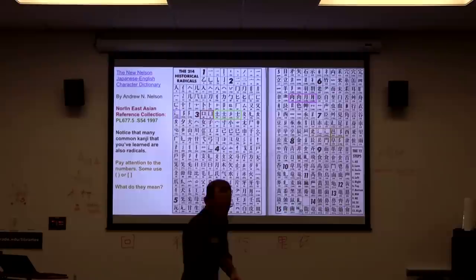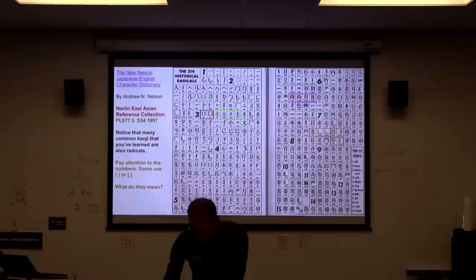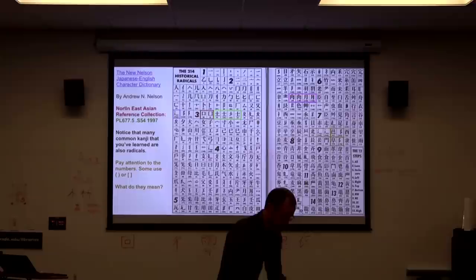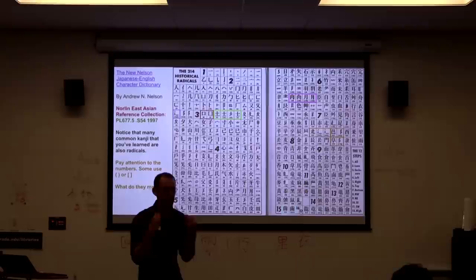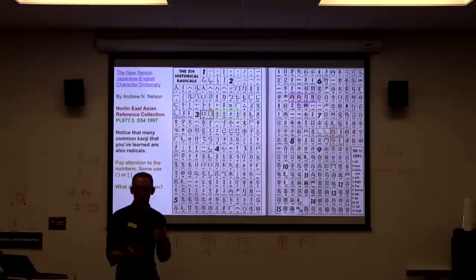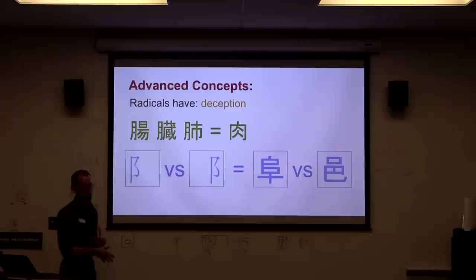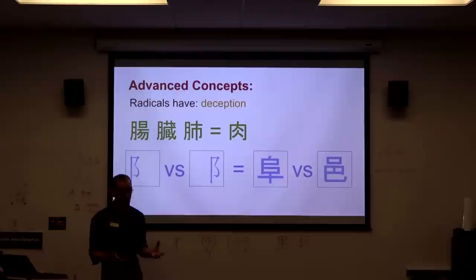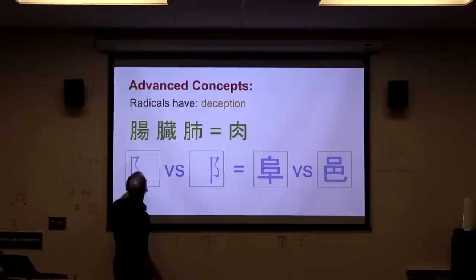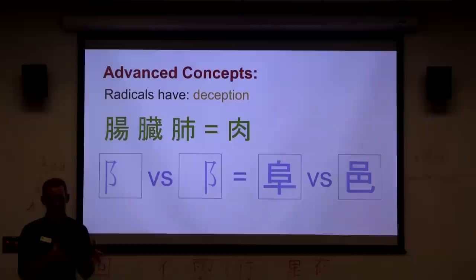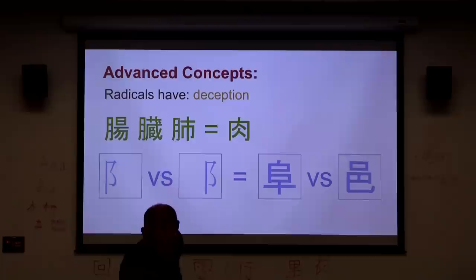The thing about this messy-looking radical chart with all these cross-references — if you look at how it's done in the Morohashi dictionary, it's so much cleaner. That's because there's a base level of assumption about the user: Japanese people already understand so many of the conventions I'm teaching you today that they don't need the cross-referencing system. They already know that these two forms are the same. Same thing with nikuzuki — there's not a whole explanation in a lot of Japanese dictionaries. They know that's how it's arranged and where to look. They're not looking under four strokes — they're looking under six, because they see four strokes but think six.